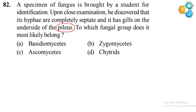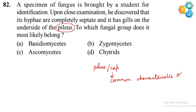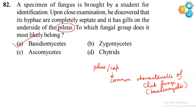But what is pileus? Pileus is basically a cap-like structure, and this is a common characteristic of club fungi. Club fungi basically refers to Basidiomycetes. So from this, we can identify that this indicates the class Basidiomycetes.